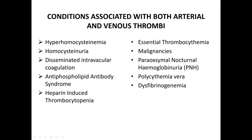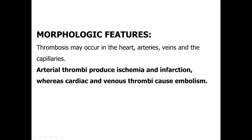Conditions associated with both arterial and venous thrombi include: hyperhomocysteinemia, homocystinuria, disseminated intravascular coagulation (DIC), antiphospholipid antibody syndrome, heparin-induced thrombocytopenia, essential thrombocythemia, malignancies, PNH, polycythemia vera, and dysfibrinogenemia. Morphological features: thrombosis may occur in the heart, arteries, veins, and capillaries. Arterial thrombi produce ischemia and infarction, whereas cardiac and venous thrombi can cause embolism.